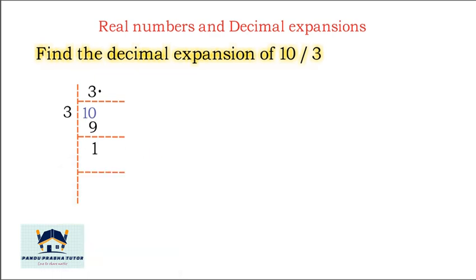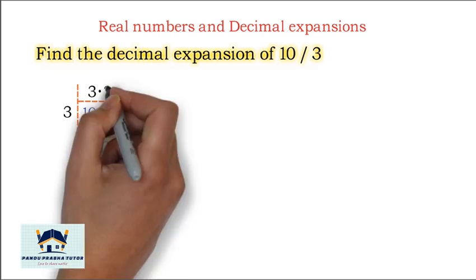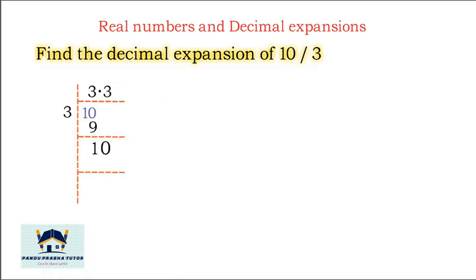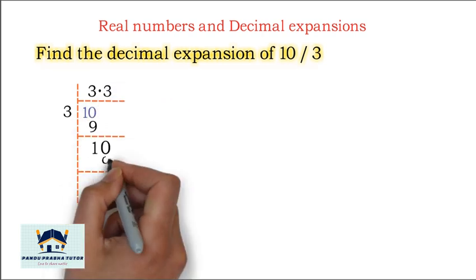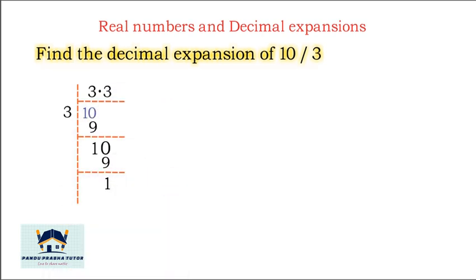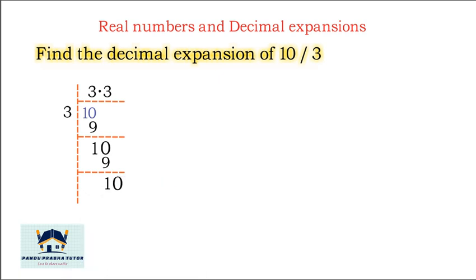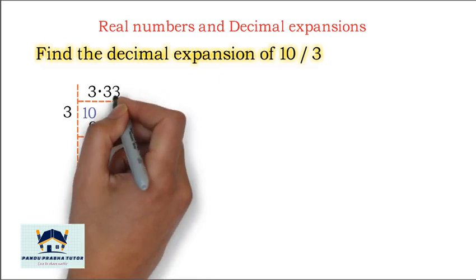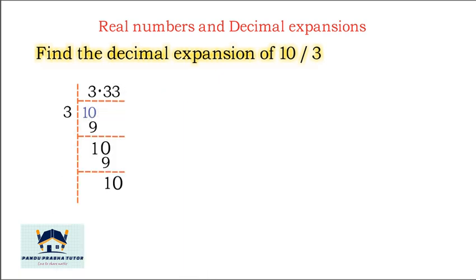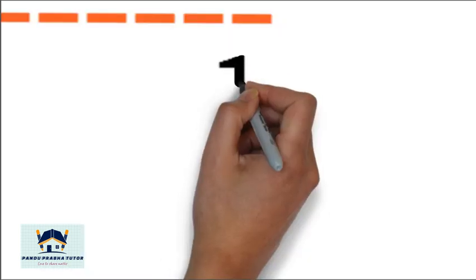Now put the decimal point and take 0. 3 goes into 10 again: 3 times 3 is 9, remainder is 1. Take 0 again: 3 times 3 is 9, remainder is 1 again.